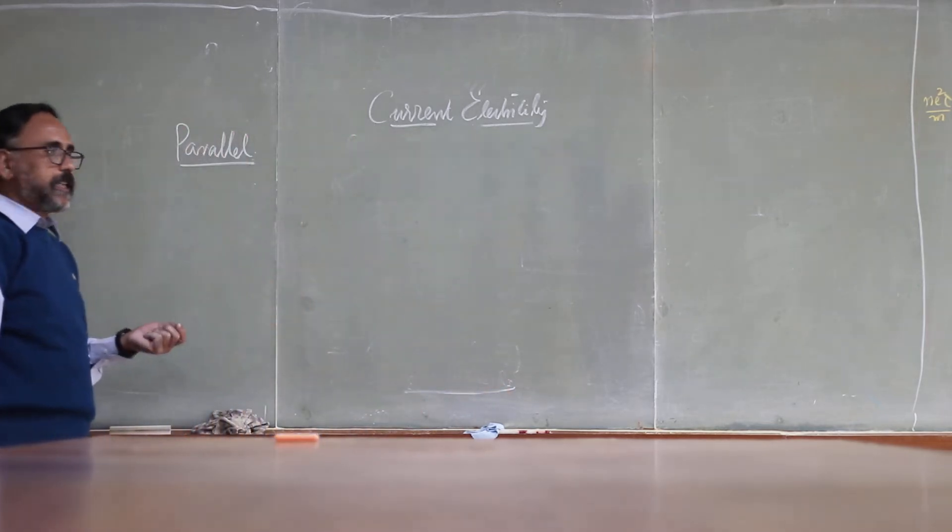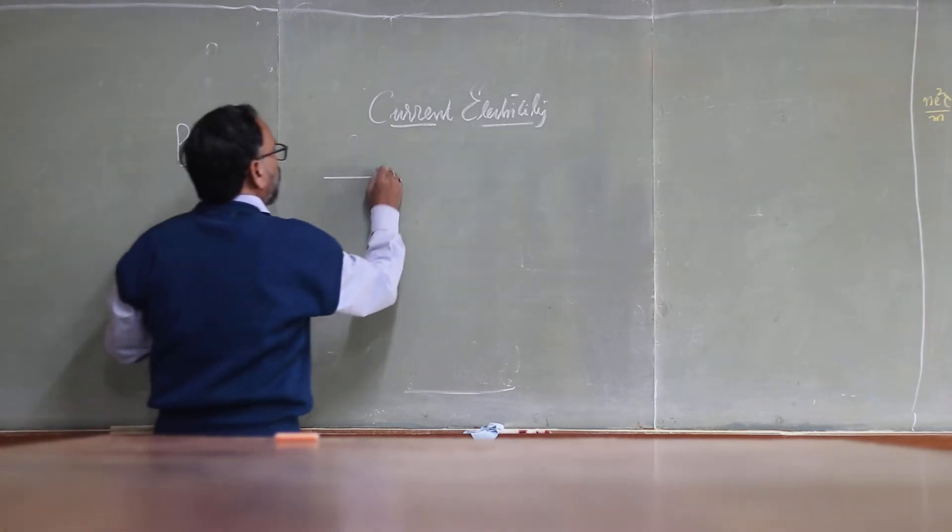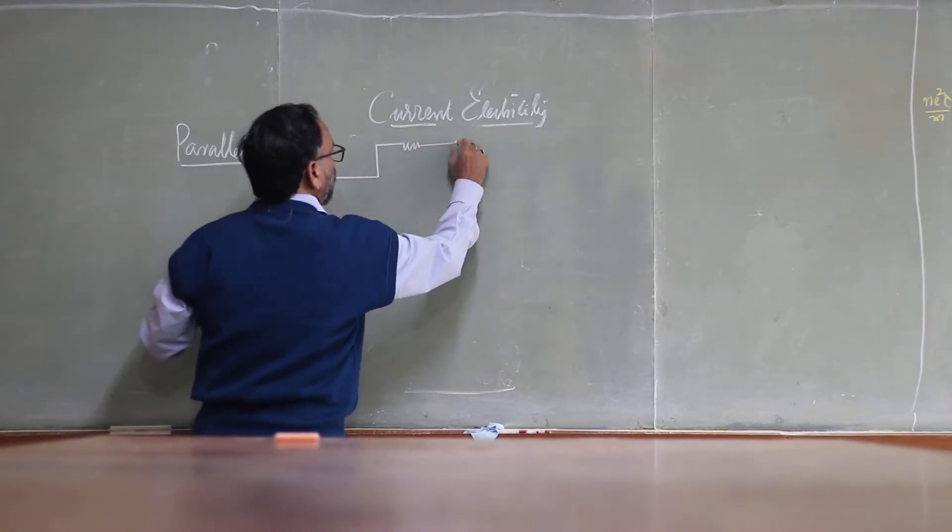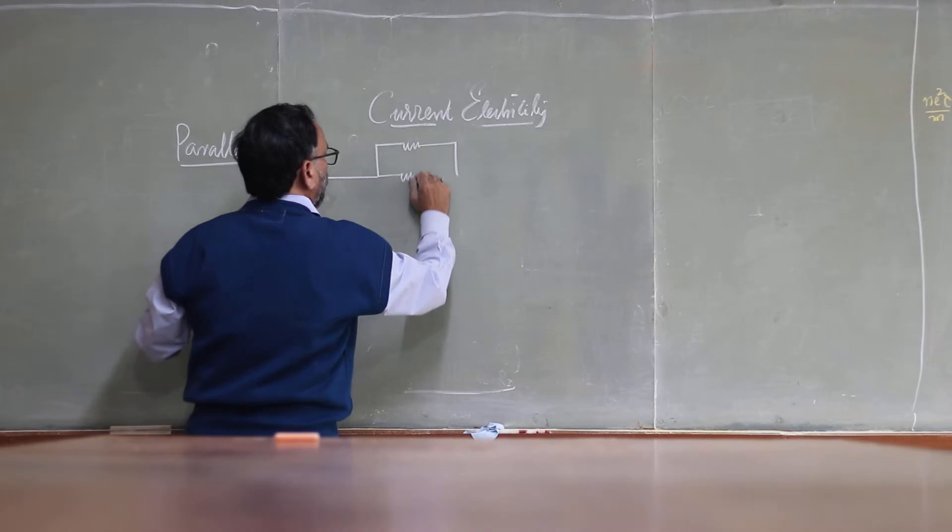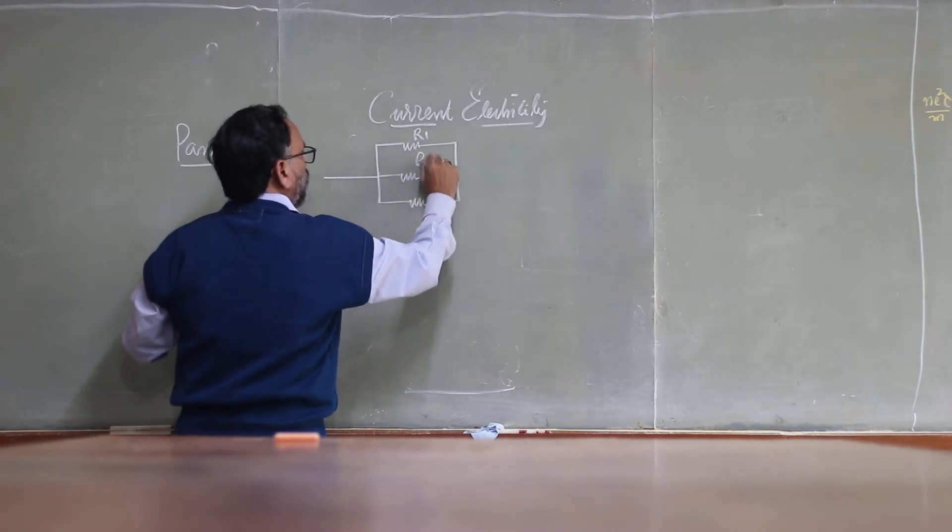Now let's derive the net resistance for three resistors connected in parallel. So the circuit pattern is like this.